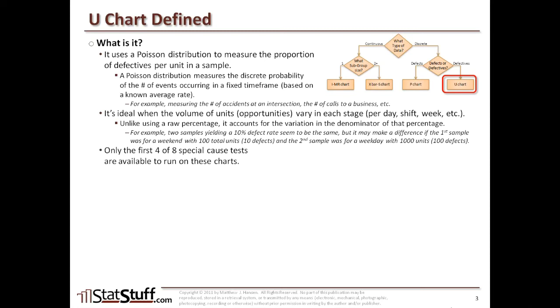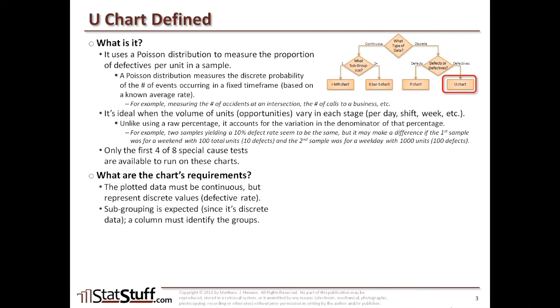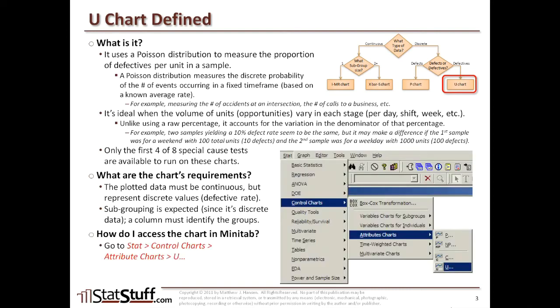Only the first four out of the eight special cause tests are available to run on these charts. The special cause tests are reviewed in the measure phase in a separate lesson called testing for special cause variation. What are the requirements for this particular chart? The plotted data must be continuous, but they should represent discrete type of values like a defective rate. Subgrouping is expected since we're dealing with discrete data, and a column must identify those different groups. To access within Minitab, you go to the stat menu, select control charts, then select attribute charts, and then choose U.